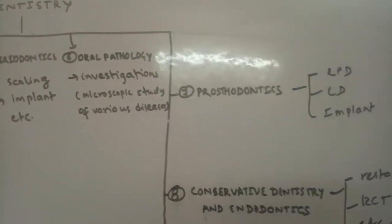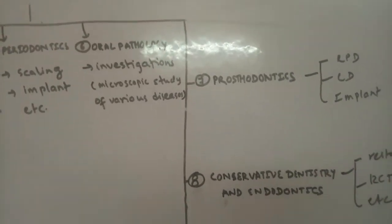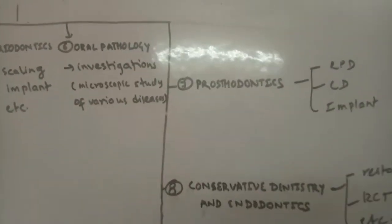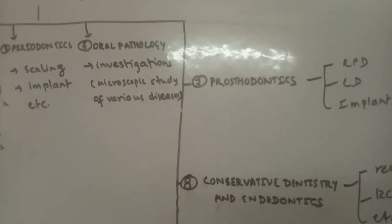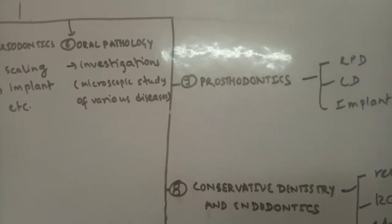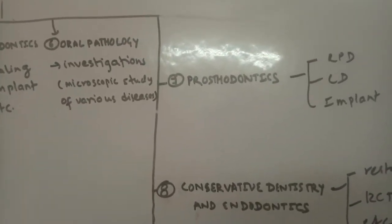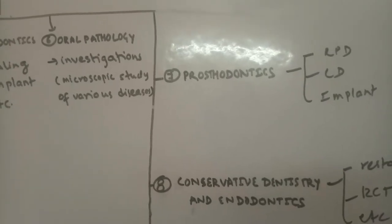The fifth important branch is periodontics, which deals with scaling, implant placement, and more. The sixth important branch is oral pathology, which deals with investigation of various oral diseases.